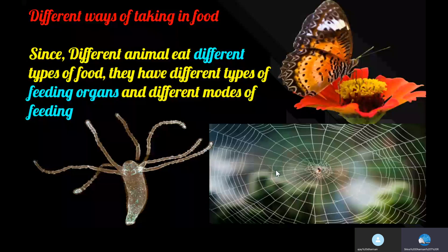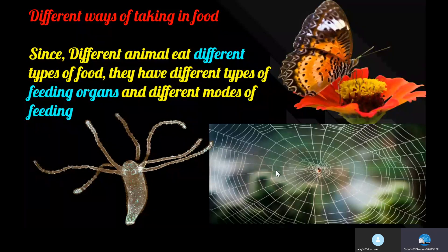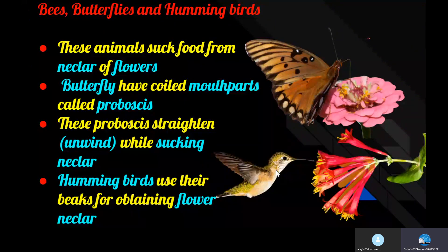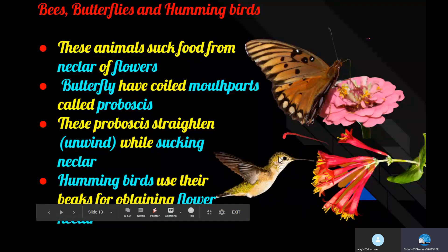Now let us look at different modes of nutrition — different ways of taking in food. Since different animals eat different types of food, they have different feeding organs and modes of feeding. Bees, butterflies, and hummingbirds suck nectar from flowers. Butterflies have a coiled mouthpart known as proboscis, which unwinds to form a straight tube to suck nectar. Hummingbirds use their long beaks to suck nectar.